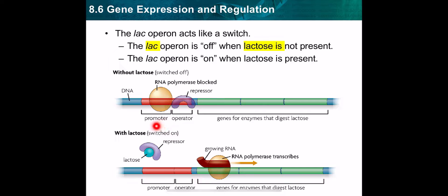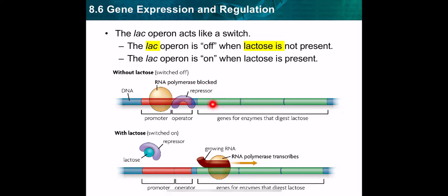The operon is composed of a promoter, an operator, plus the genes for the proteins — whether those proteins are enzymes or any other proteins — all together forming the structure called an operon. This operon is called the lac operon because it contains the genes for formation of an enzyme that digests lactose. That's why it's called the lac operon — its function relates to lactose digestion.